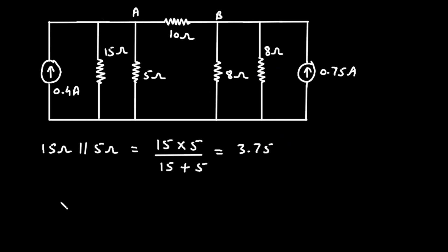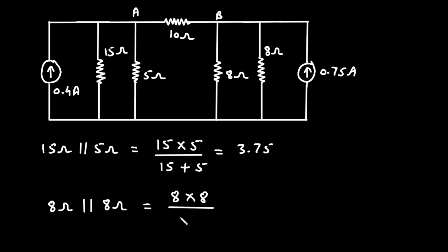Similarly, the 8 ohm and 8 ohm are connected in parallel. 8 ohm parallel with 8 ohm equals 8 into 8 divided by 8 plus 8, which simply equals 4 ohm.